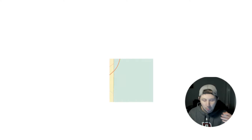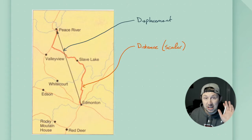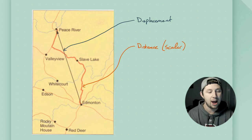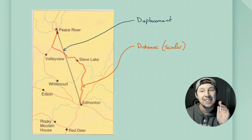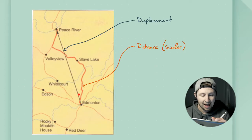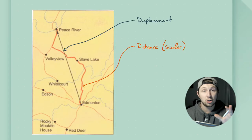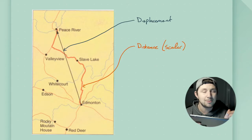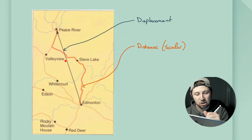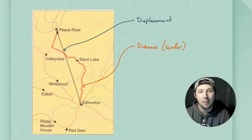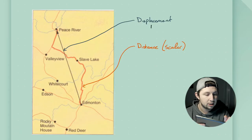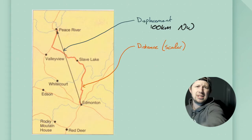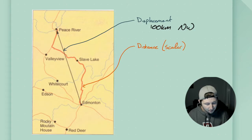Here is a map from Edmonton to Peace River, Alberta. If we talk about the distance — scalar quantity, magnitude only — we would say that is this red line travelling all the way along the road, roughly 200 kilometers. But if we look at the displacement, which is a vector quantity, it's just this straight black line from Edmonton to Peace River — let's estimate that as 100 kilometers — but we'd also have to include the direction, so 100 kilometers northwest roughly. Obviously those numbers are estimated, but you get the picture.